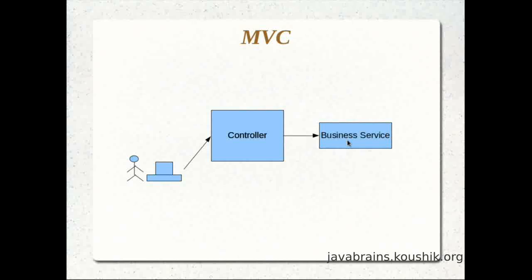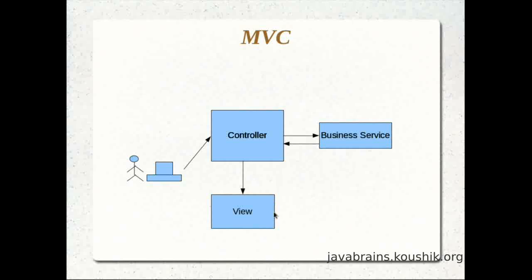The controller knows there is another object that specializes in pulling up users from the system, and that object will have a method like getAllUsers. So the controller calls businessService.getAllUsers. The business service is only concerned with getting all the users, which it does, and once the list is available, it passes it back to the controller. The controller then takes this list of users and passes it on to the view, which specializes in rendering the data in a proper format that the user can consume. Once the view gets this data, it formats everything and makes it ready for consumption.